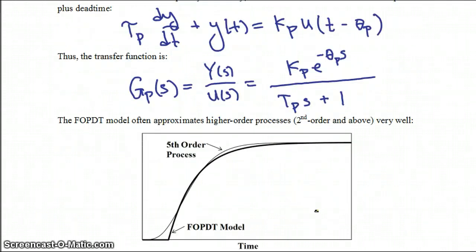Now the good thing about the first order plus dead time model is that it often approximates higher order processes. That would be second order and above processes very well, as shown by this graph.